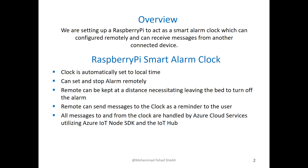As a brief overview, the Raspberry Pi is created as a smart alarm clock, which can be configured remotely and can receive messages from another connected device. The clock is automatically set to local time.